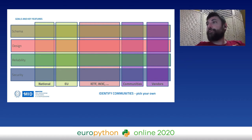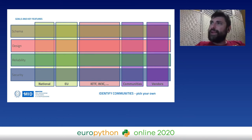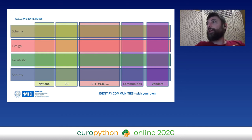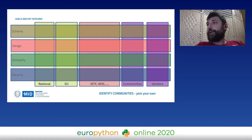Finally, we have communities — one community can be the Python community, for example, but there are many others interested in security, design, or schemas. Another column covers vendor communities, because if we have features that people need to implement, we need feedback from vendors. Those are the main communities we identified, but in your own context you can pick your own communities.